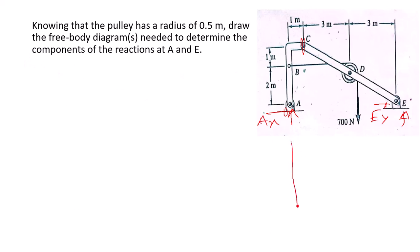Next we need to find A_x and E_x. For step two, we cut at point C. The 700 Newton force acts at point B in this direction, plus A_y and A_x.